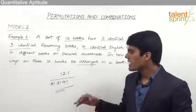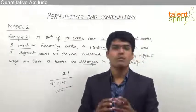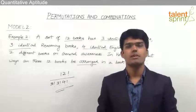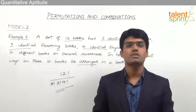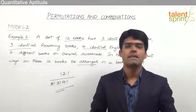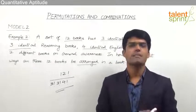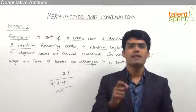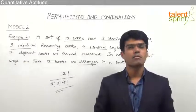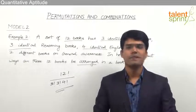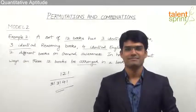So this is how we solve questions based on permutations of similar objects. Wherever there is a repetition of objects, take that number of objects' factorial in the denominator to get the required answer.